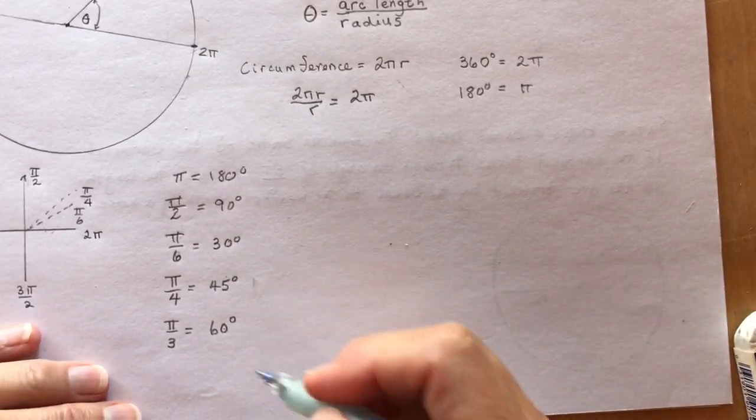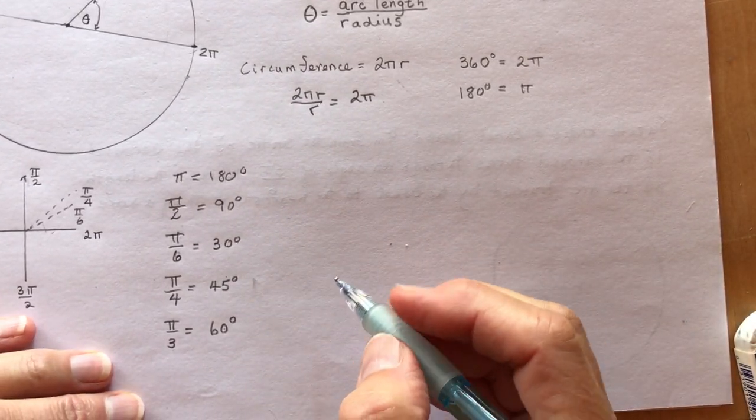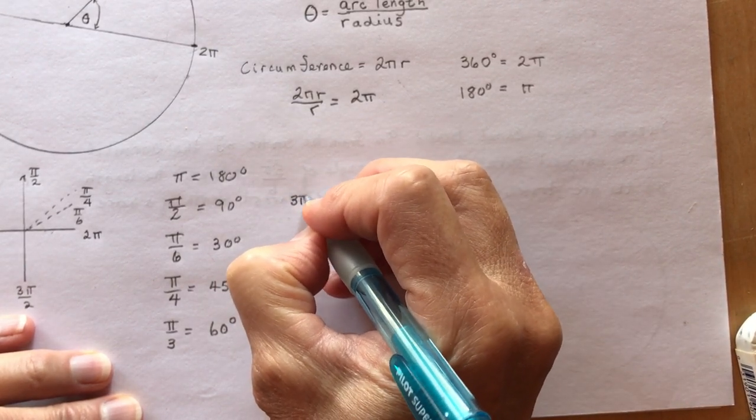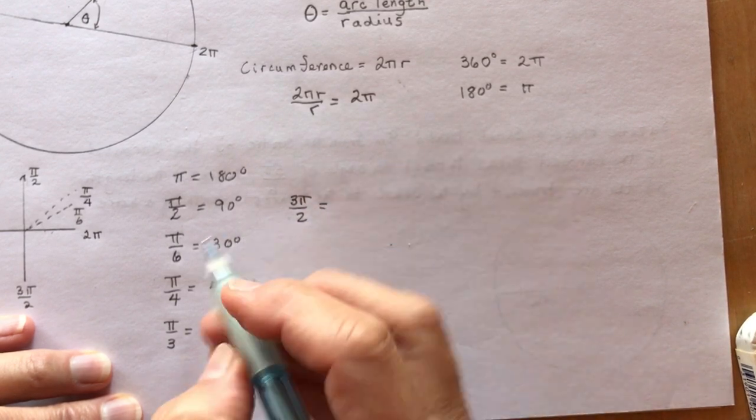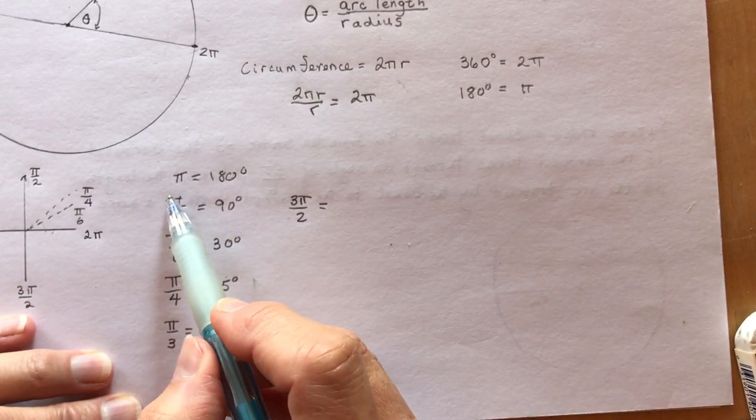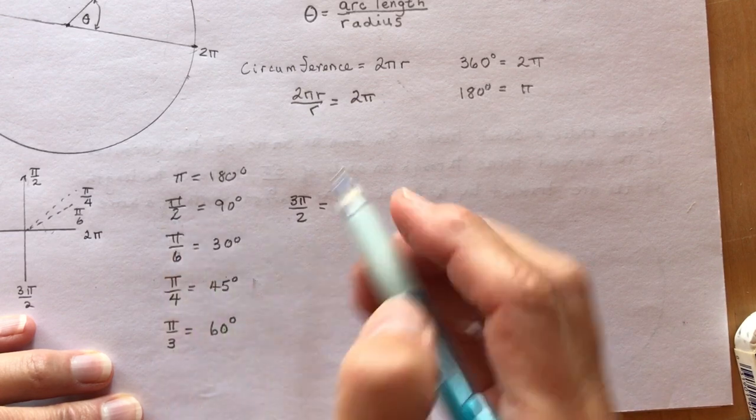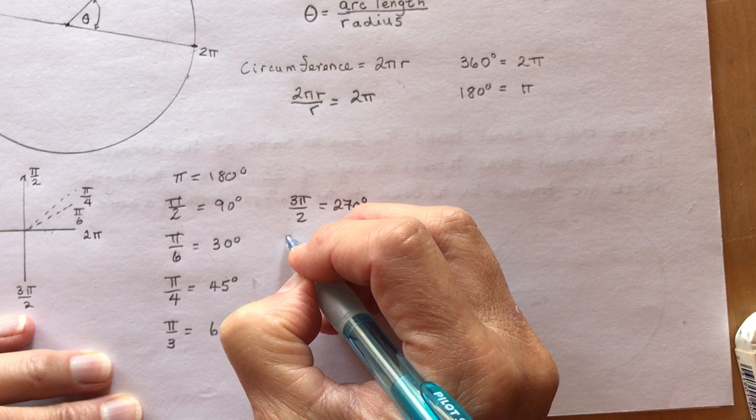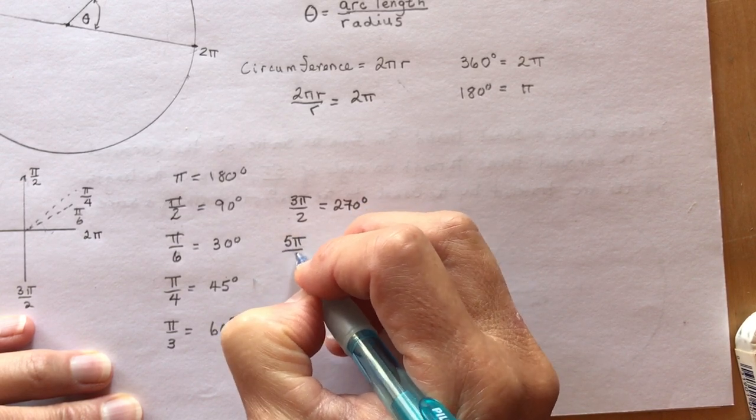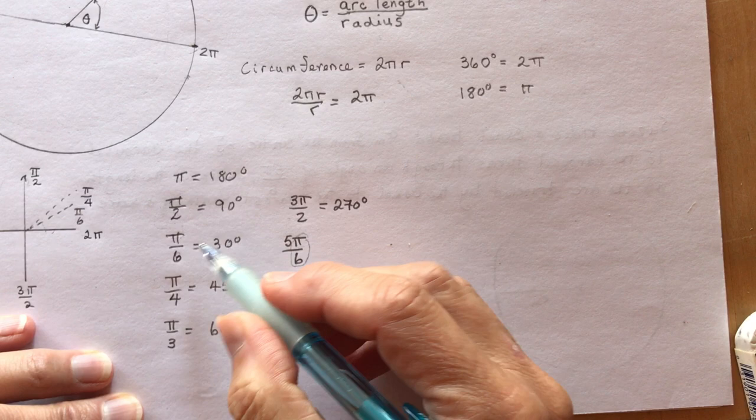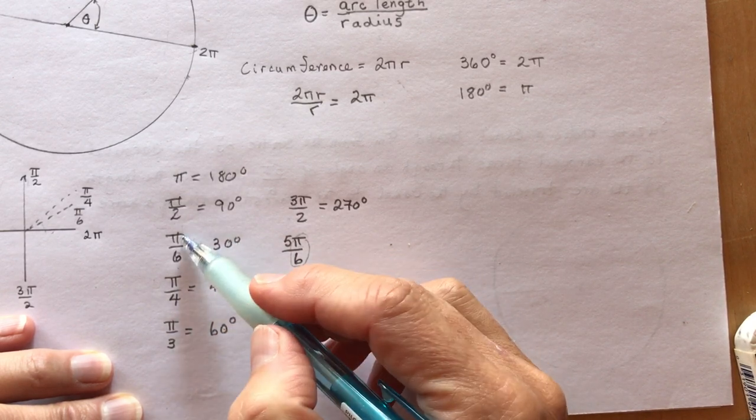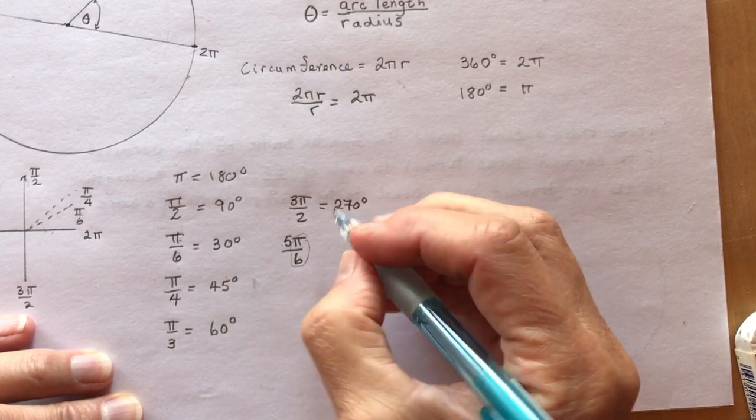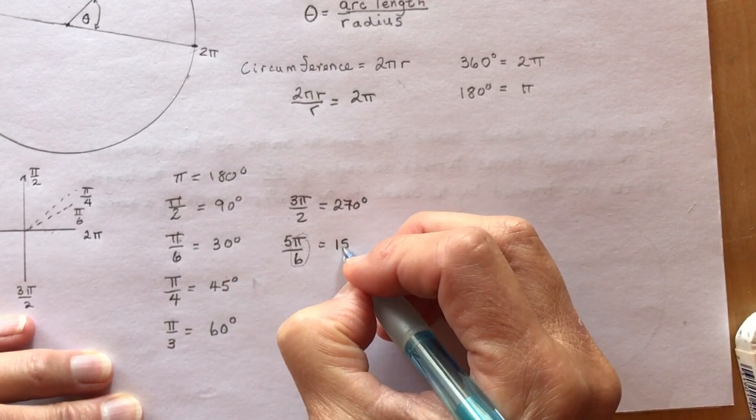So I've got all the angles and now I can figure out if I said what is 3π/2? That's going to be three times π/2, which is 270 degrees. What's 5π/6? Well, I know π/6 is 30, so 180 divided by 6 is 30, times 5 is 150 degrees.